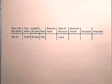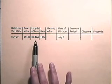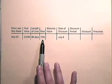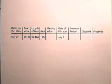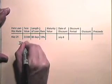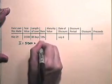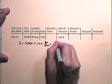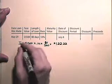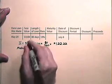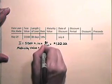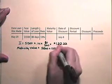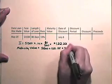Now let's find the proceeds when discounting a simple interest note. We want to find the maturity value of the simple interest note. The loan was made on May 29th, with a face value of $5,500, a length of 80 days, and a rate of 10%. The interest is $5,500 times 10% times 80 divided by 360, which equals $122.22. So the maturity value is $5,500 plus $122.22, which is $5,622.22.